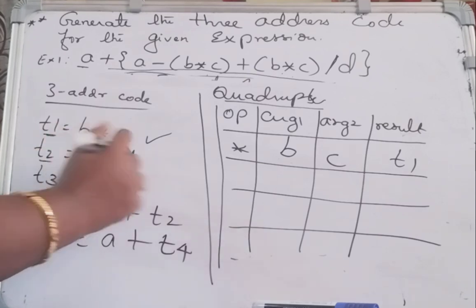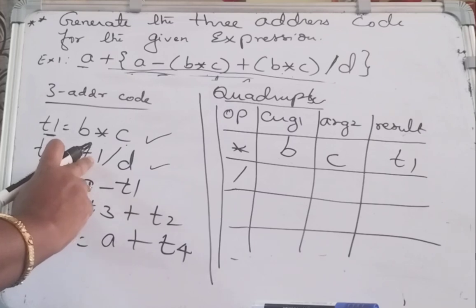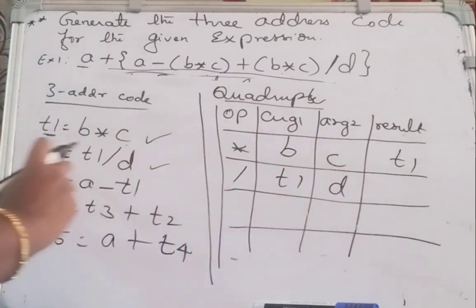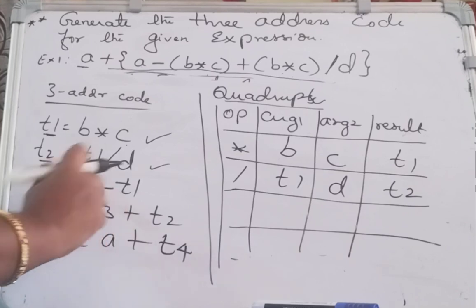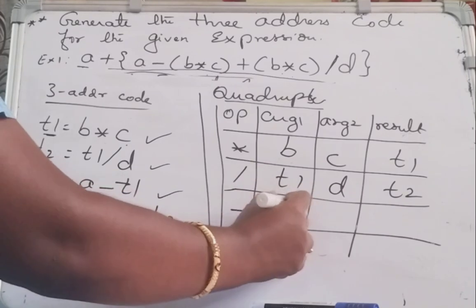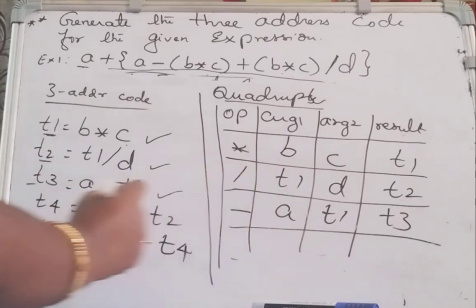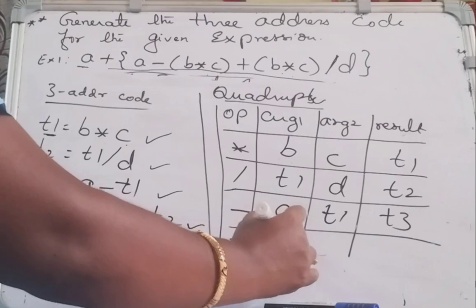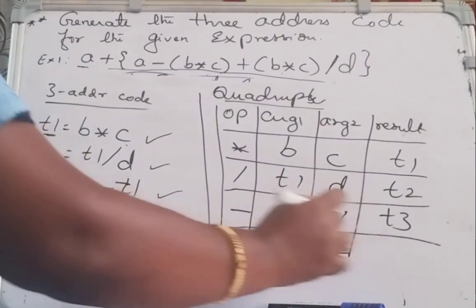The next is the second instruction: division operator — write division there. Argument one is T1, argument two is D, and the result is stored in temporary register T2. The third instruction: operator is minus, argument one and argument two are A and T1, and the result is stored in T3. Next instruction: it is plus operator. Argument one is T3, argument two is T2, result is stored in T4.